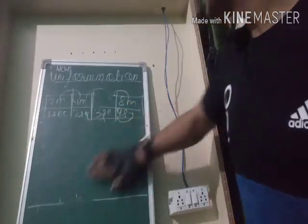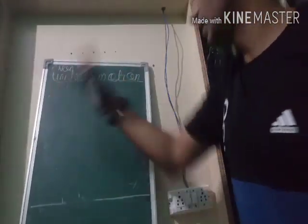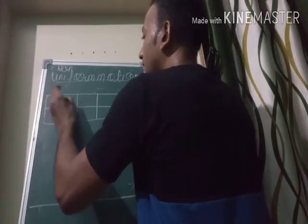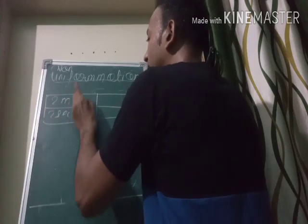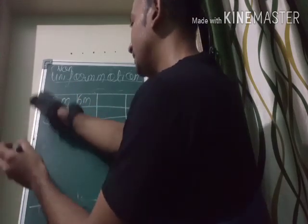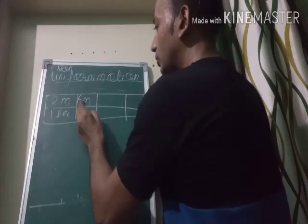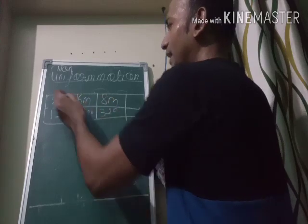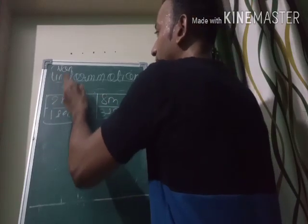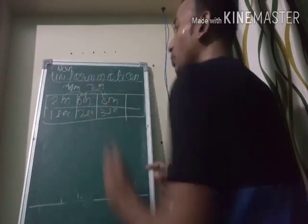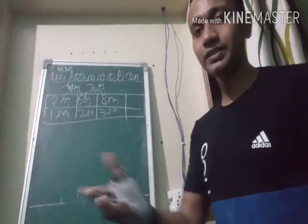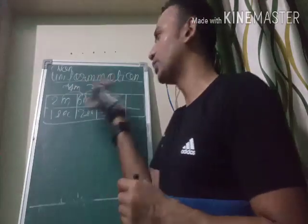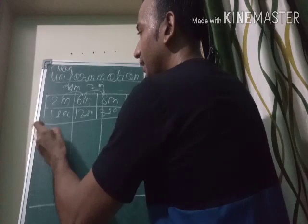Our last topic is non-uniform motion — just the antonym of uniform motion. Using a similar table but with different numbers: suppose the body covered two meters in one second, then six meters in two seconds, then eight meters in three seconds. Here the increase is unequal — first two meters, then four meters — so speed is not constant.